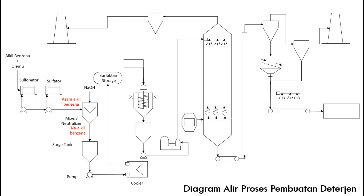Bubur surfaktan dari surfaktan storage bersama sodium tripolyphosphate dan bahan aditif dialirkan menuju ke crutcher. Di dalam crutcher, bahan-bahan diputar atau dicampur dengan mixer kecepatan tinggi hingga homogen. Sejumlah air dihilangkan dan campuran menjadi lebih kental dikarenakan adanya reaksi hidrasi dari sodium tripolyphosphate.